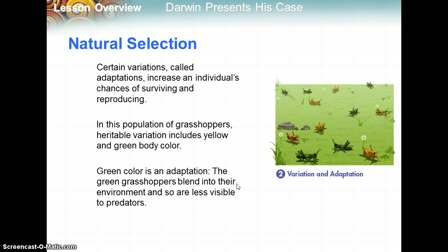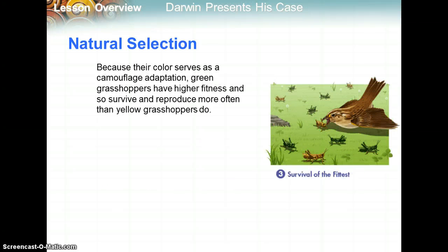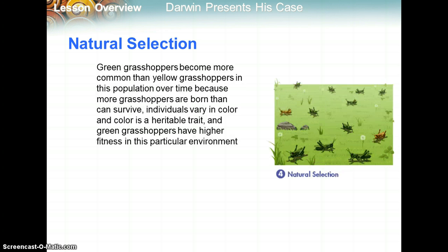Consider a hypothetical population of grasshoppers that changes over time as a result of natural selection. Grasshoppers can lay more than 200 eggs at a time, but only a small fraction of those offspring survive to reproduce. Certain variations called adaptations increase an individual's chances of surviving and reproducing. In this population, heritable variation includes yellow and green body colors. Green color is an adaptation — the green grasshoppers blend into the green grass, making them less visible to predators. Because their color serves as camouflage, green grasshoppers have higher fitness and survive and reproduce more often than yellow grasshoppers. The bird eats the yellow grasshoppers because they stand out, while the green ones blend in, survive longer, and pass on those green genes. Over time, green grasshoppers become more common because individuals vary in color, color is heritable, and green grasshoppers have higher fitness in this environment.